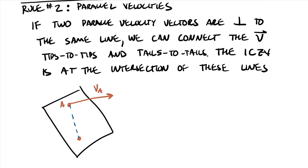And then here, let's say that this is VB, call this point B. Then here's my tips to tips and tails to tails. So tails to tails are already connected here along line AB. And then tips to tips, we come here on the diagonal. And we find that our ICZV is at the intersection point between these lines.